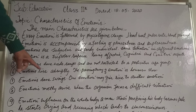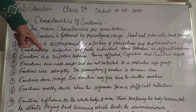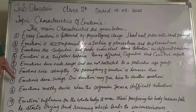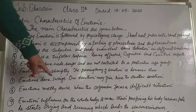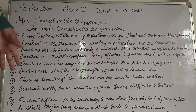Number six: emotions arise abruptly, but the passing away of emotion is however slow, leaving behind an emotional state which lasts for some time. Number seven: emotions have carry-over effects, meaning one emotion may give rise to another emotion, and the two may get merged.